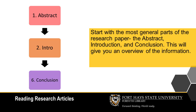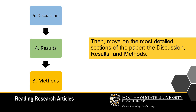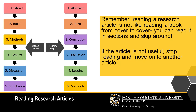Start with the most general parts of the research paper. The abstract, introduction, and conclusion will give you an overview of the information. Then move on to the most detailed sections of the paper: the discussion, results, and methods. Remember, reading a research article is not like reading a book from cover to cover — you can read it in sections and skip around.